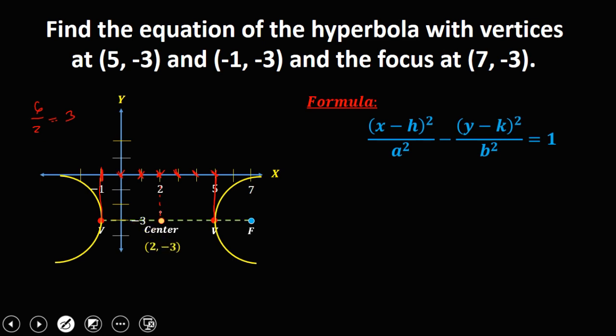Now since center is h and k, so h is 2 and k is negative 3. Now in a hyperbola, these are the things to remember.